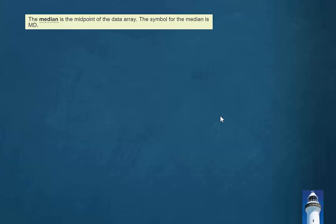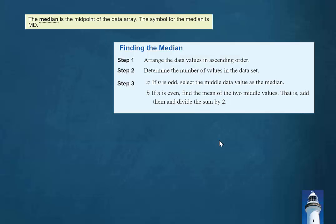The median is the midpoint of the data array. The symbol for the median is MD. The process for finding the median begins with arranging the data values in ascending order. The next step is to determine the number of data values in the data set.